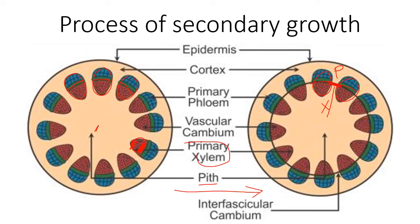Here you can see the vascular cambium. Outside this cambium you can see phloem. So the arrangement is: this is xylem, this is cambium, and this is phloem. Outside this stela region you can see a zone — this is actually called the cortex. And this outermost layer is called the epidermis.